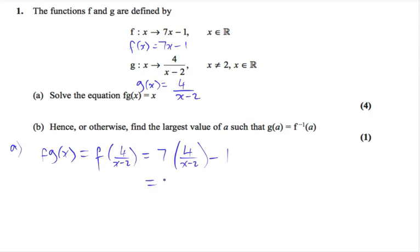So 4 over x minus 2 minus 1. Expanding this bracket here we will have 28 over x minus 2 minus 1. The equation is f of g of x equals x, which now becomes 28 over x minus 2 minus 1 which we have here equals x.